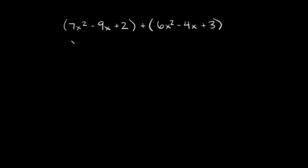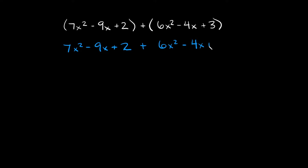So the first thing you want to do is actually drop the parentheses. Since we're adding, you're just left with 6x squared minus 4x plus 3. That looks a bit messy, so let's clean it up.